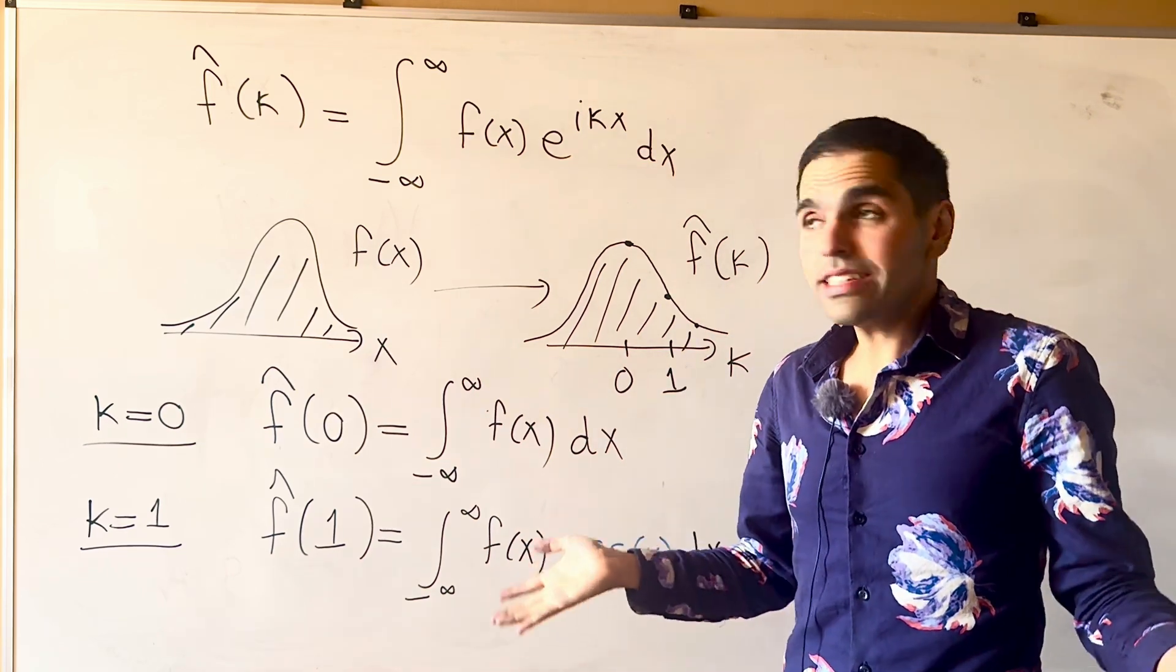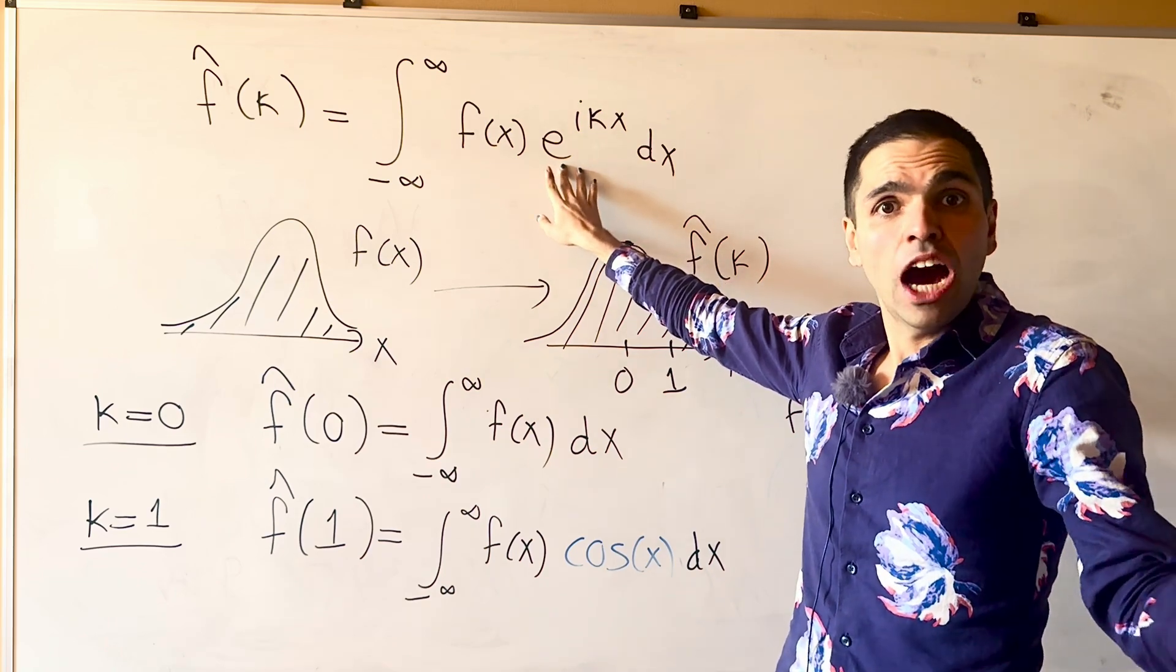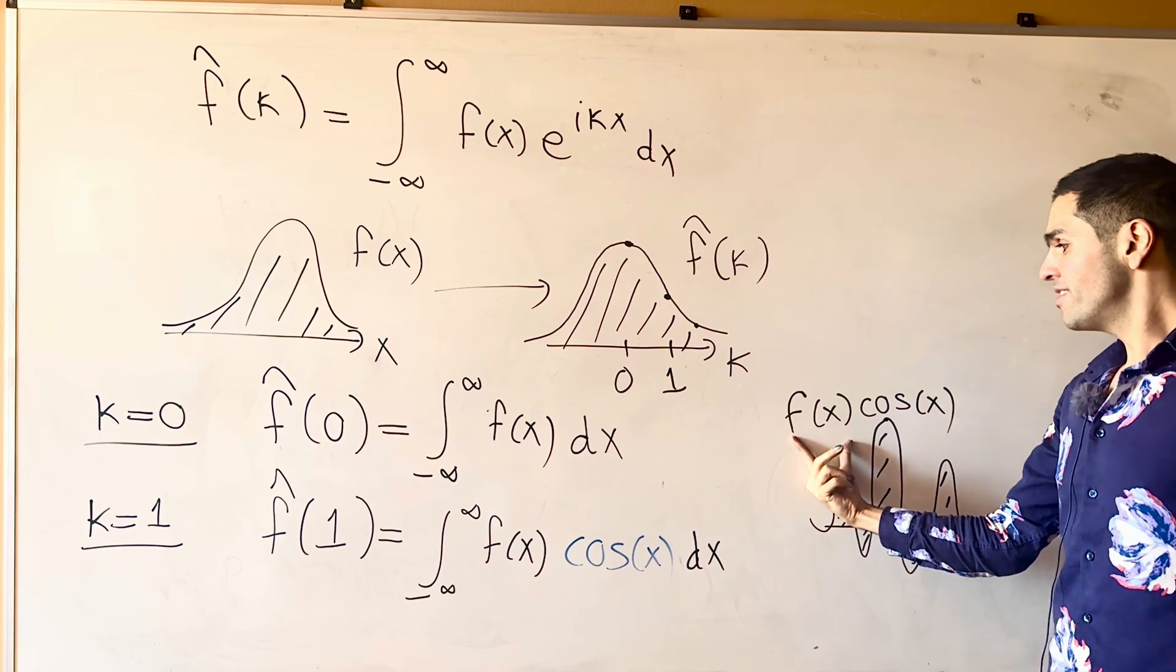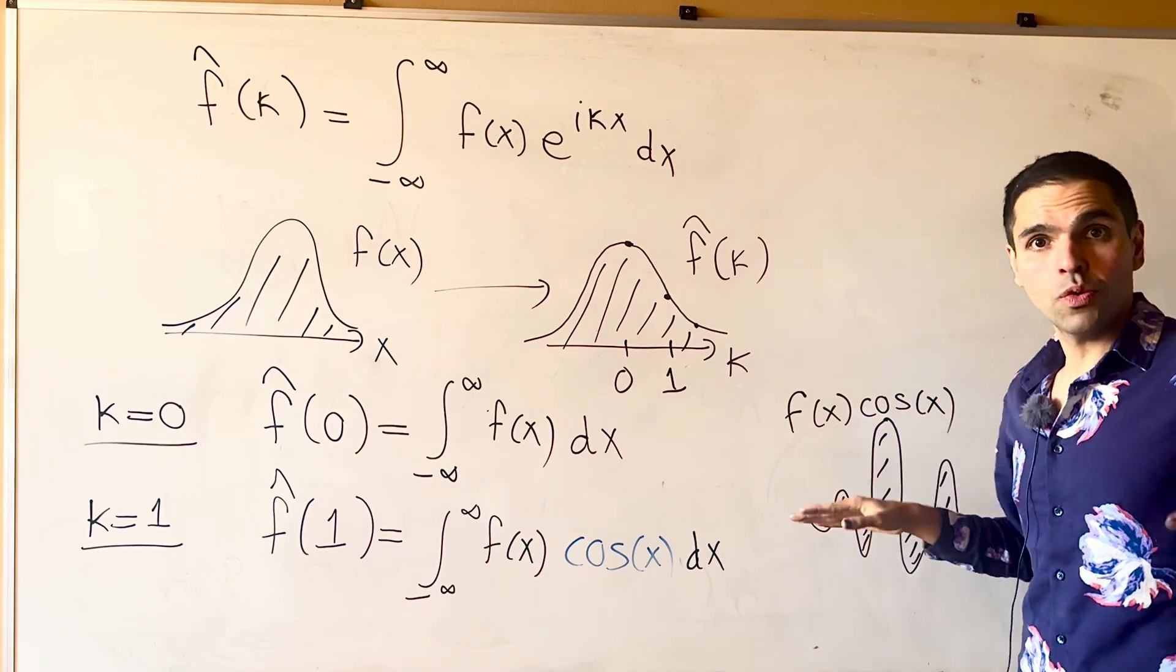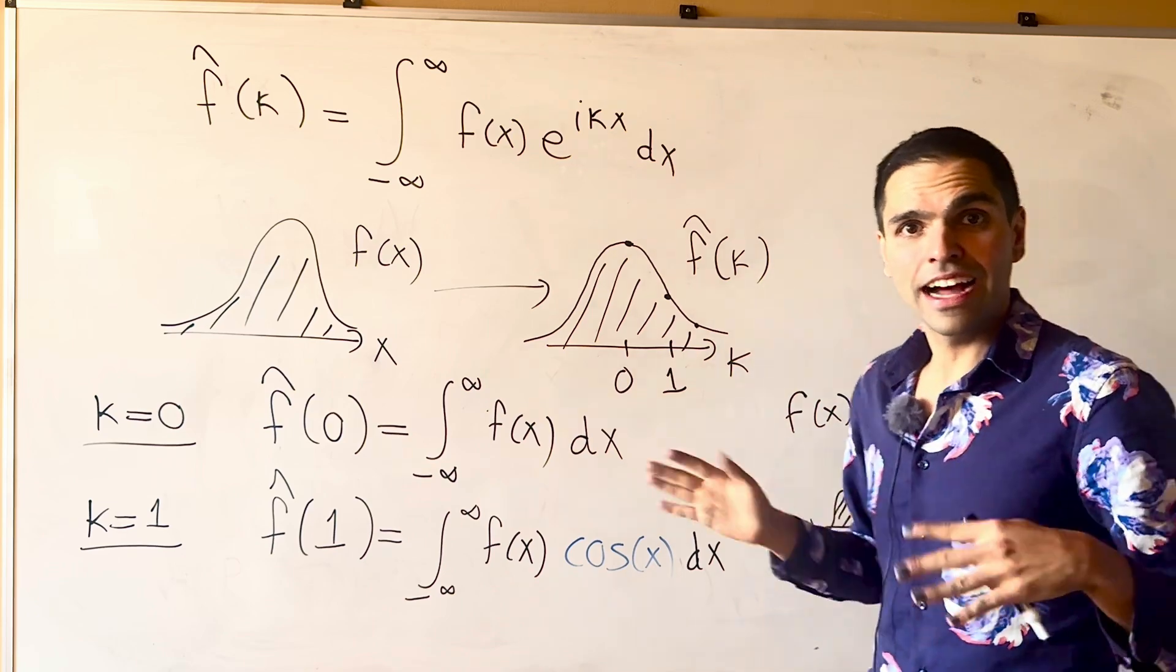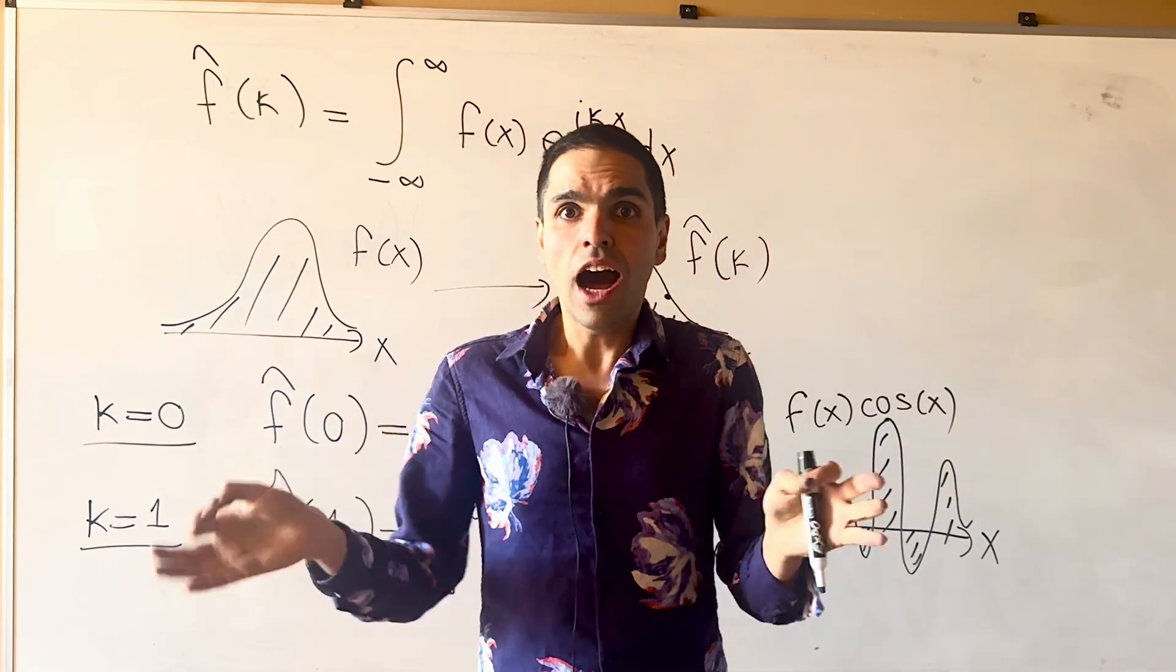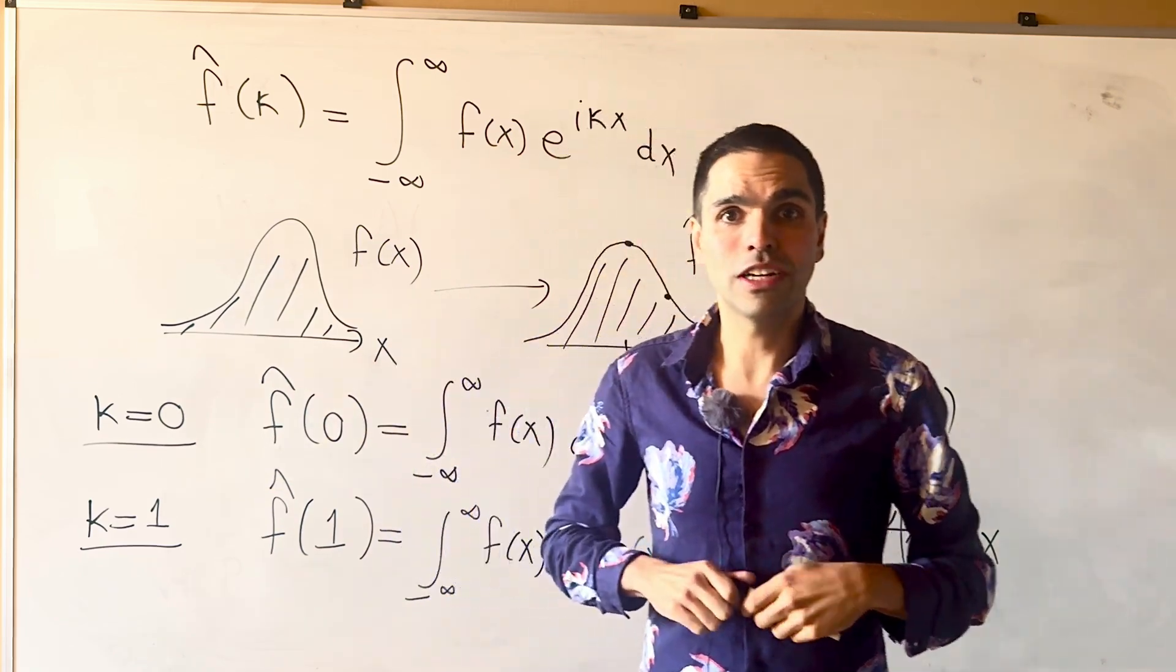But, once again, I want to emphasize what f hat measures, it's really how wild the function is, because, let's say f, for instance, is cosine, then we get integral of cosine squared, where things don't cancel out. So, in some sense, it measures how close your function is to your cosine functions.